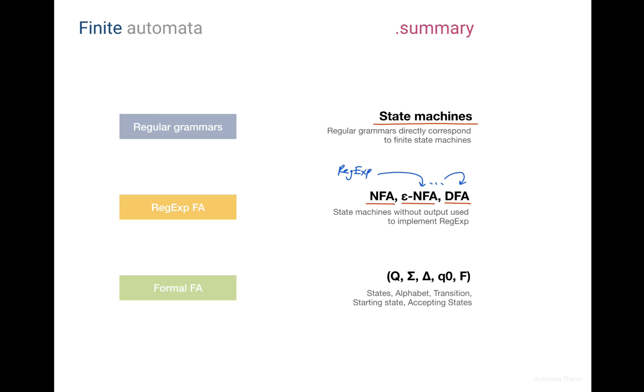The DFA, as we remember, doesn't allow Epsilon transitions and can only have one transition for a character. And in formal definition, a state machine or a finite automaton is a tuple of five elements, which are the sets of all states, alphabet, transition function, starting state, and the set of accepting states.